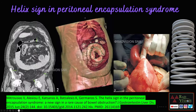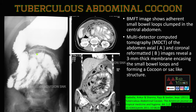The helix sign is seen in peritoneal encapsulation syndrome — a congenital variant where all small bowel loops are clustered or clumped in the mid-abdomen, surrounded by a congenitally formed membrane. The bowel loops mimic the spirals of a helix, hence the helix sign. This sign helps differentiate peritoneal encapsulation syndrome from encapsulating peritoneal sclerosis.